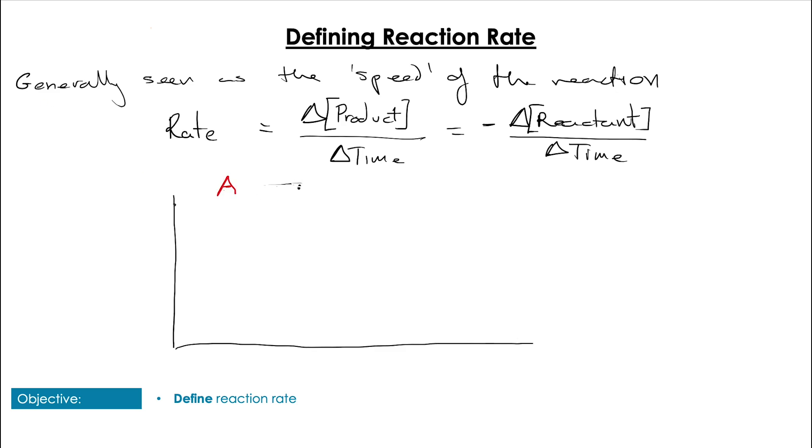If we're using up the reactants, that would initially look like a negative gradient, so we take the negative value of that for our rate of reaction. If we have the reaction A goes to B, we can see that the concentration of B would increase over time, and the concentration of A would decrease over time, where time is on the x-axis and on the y-axis is concentration.